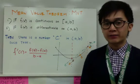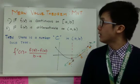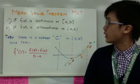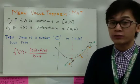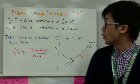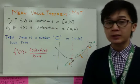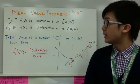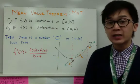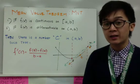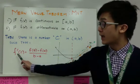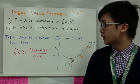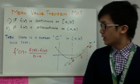We're going to be working on the mean value theorem. If f of x is continuous on the closed interval a, b, and if f of x, or the function, is differentiable on open interval a, b, according to the mean value theorem, there is a number c, or point c, in the open interval a, b, such that f prime of c is equal to f of b minus f of a, all over b minus a.